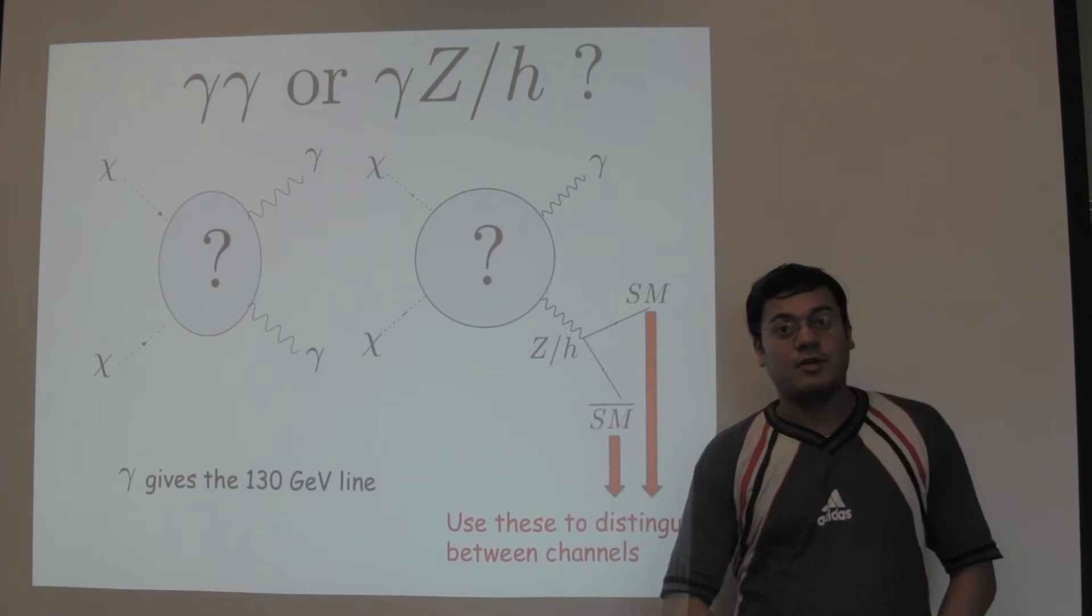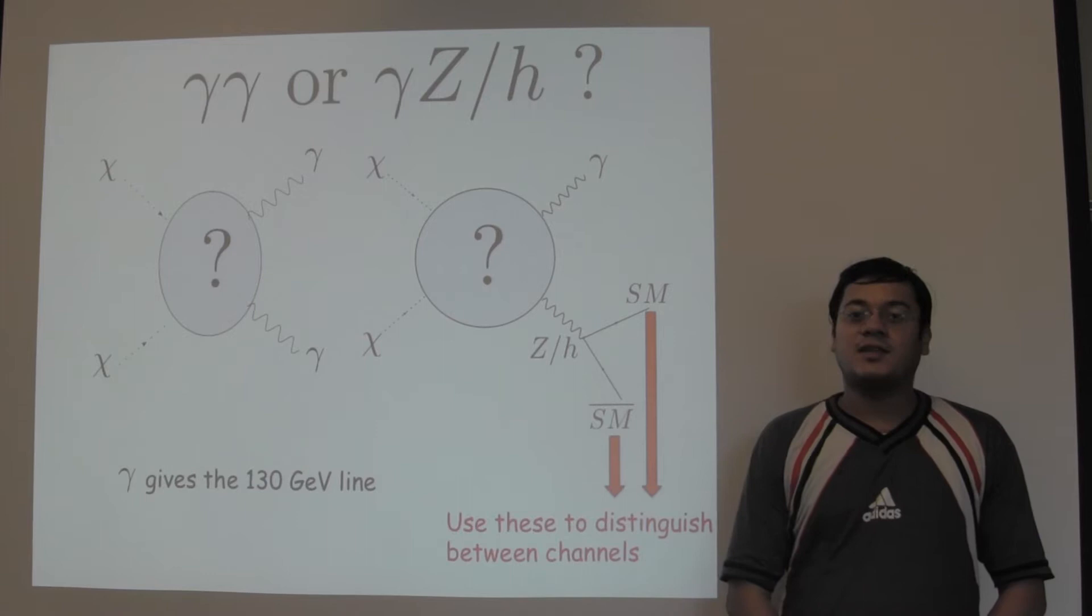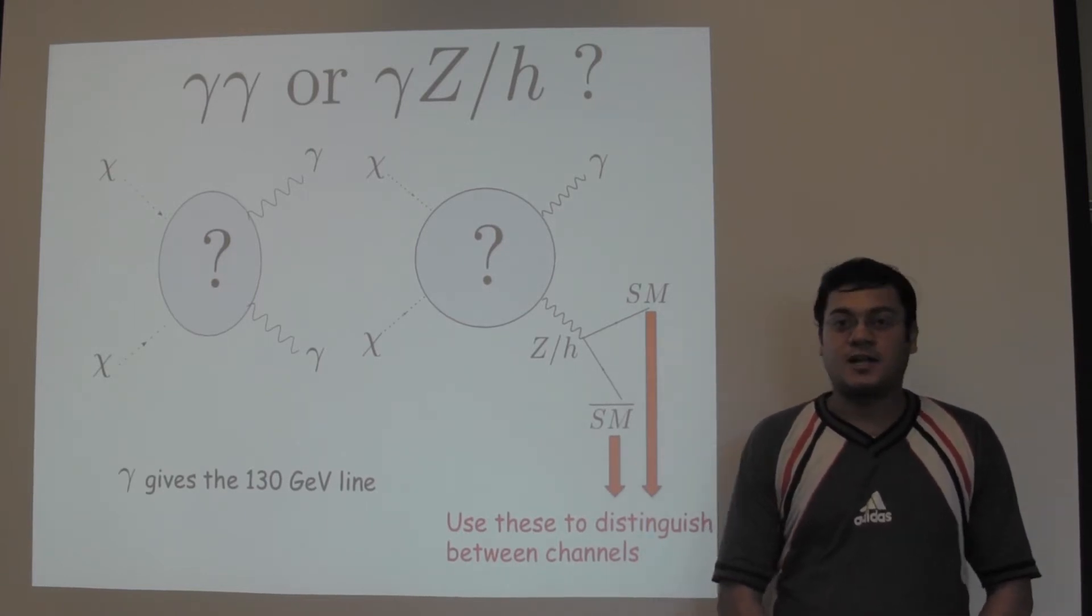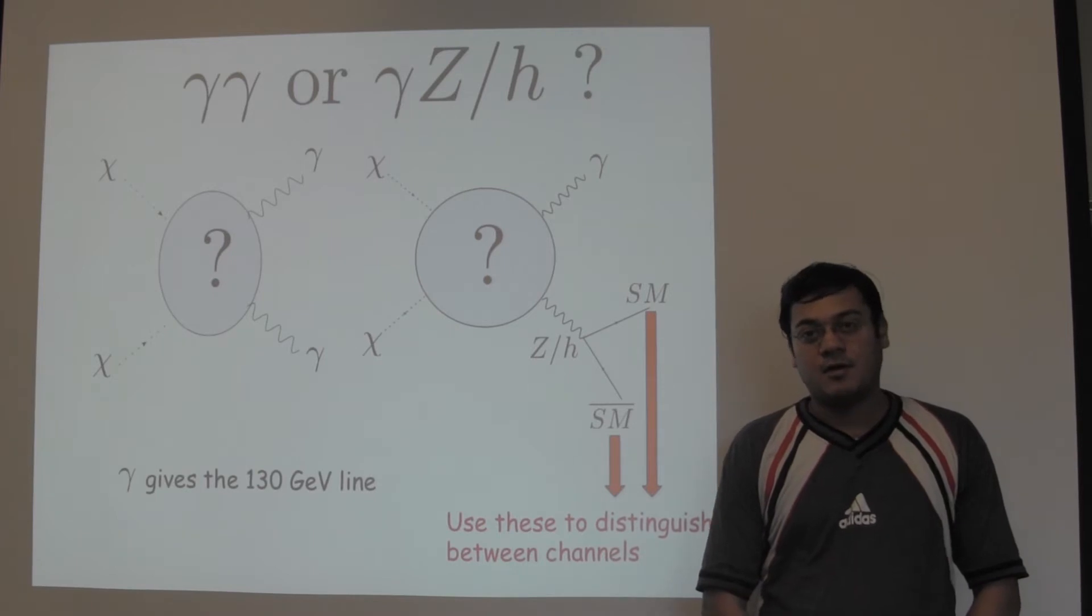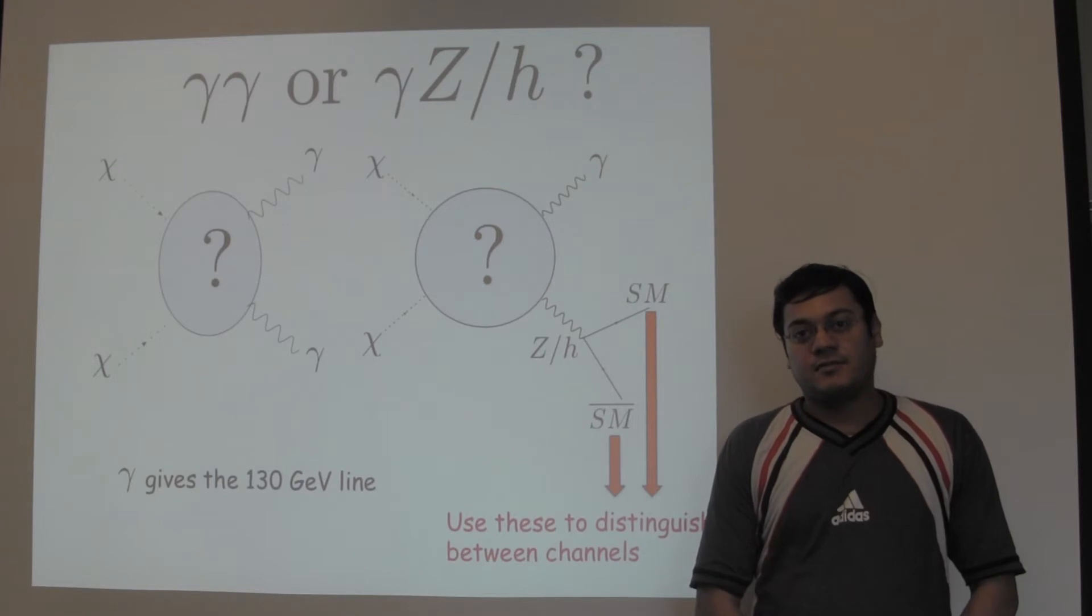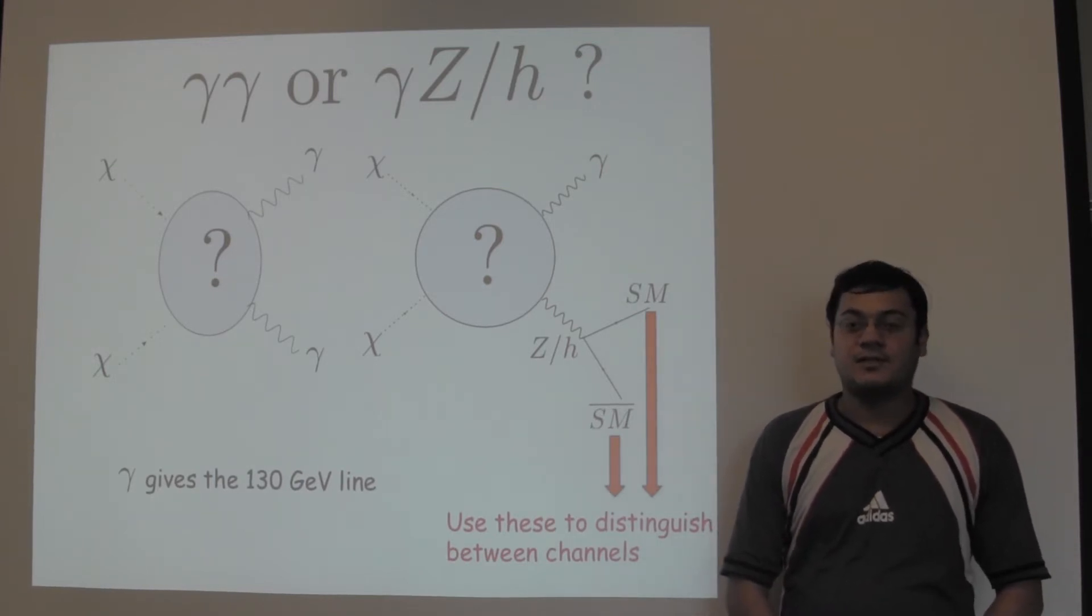In this work, we assumed that the Higgs boson has a mass of 125 GeV. We asked the question in this work, assuming this gamma ray line arises from dark matter annihilating to Z gamma or to Higgs gamma, is there a way to confirm or refute the presence of this line at the galactic center independent of any particle physics dark matter model?